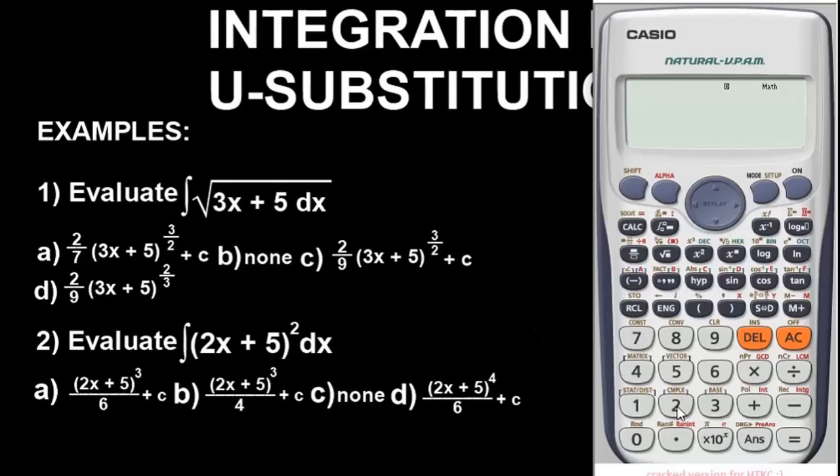To store two in the calculator, press the number first, then press shift. Look at this button, which stands for store. Press the button, then press the alphabet, look at x here. So once you do, you indicate here that the value two you have installed in the calculator.